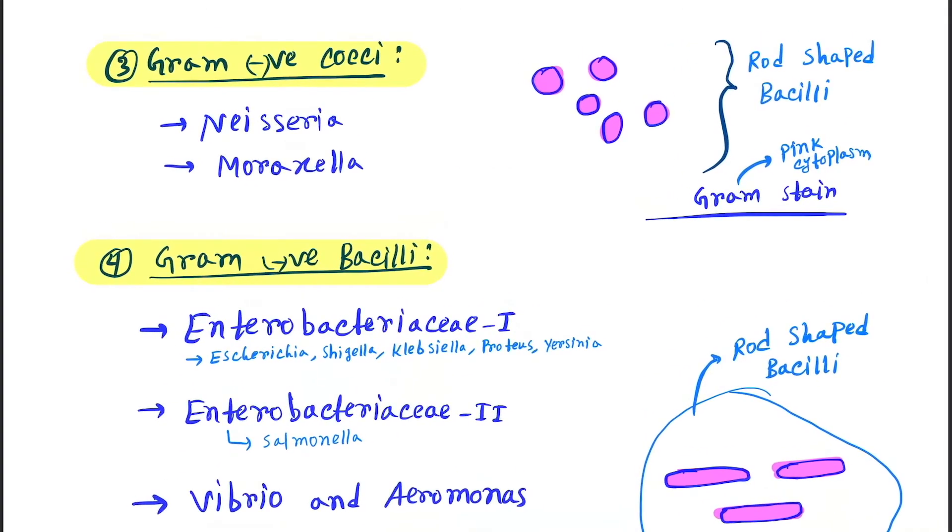Next is gram negative cocci. In gram negative, the cytoplasm will look pink in color, and the examples are Neisseria and Moraxella.